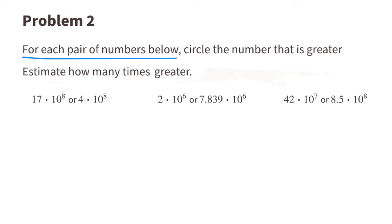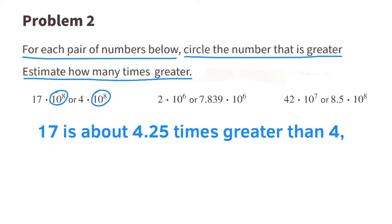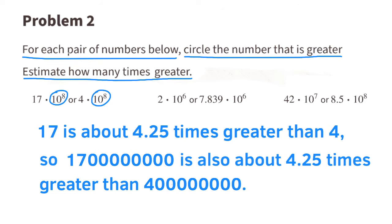Problem number two, for each pair of numbers below, circle the number that is greater. Estimate how many times greater. The first pair of numbers are both being multiplied by the same power of 10. I know that 17 is about 4 and a quarter times greater than 4, so this number is also about 4 and a quarter times greater than this number.